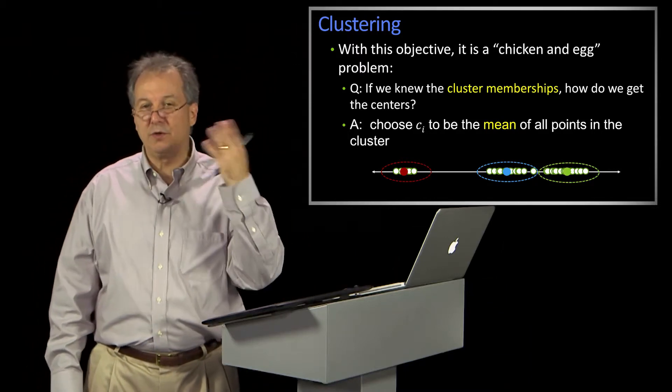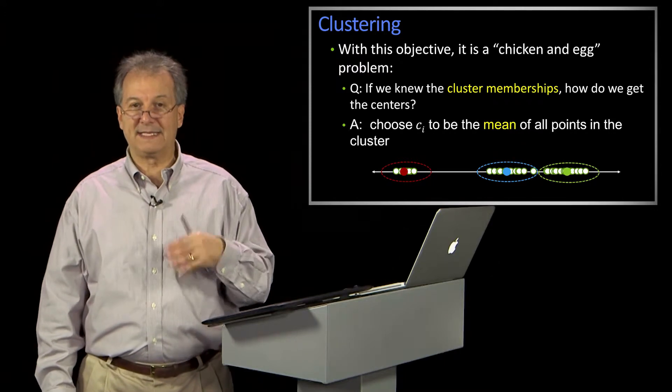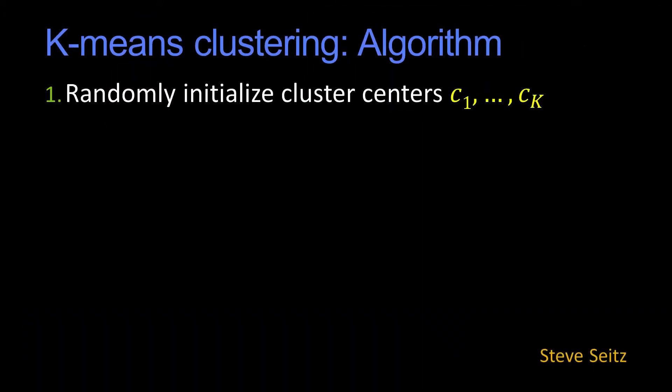So we have this chicken and the egg problem. I'm assuming most of you are familiar—this is actually referred to as k-means clustering. It solves the chicken and the egg problem by smashing them together, which could be a pretty nasty picture. But essentially, it's just an iterative algorithm.